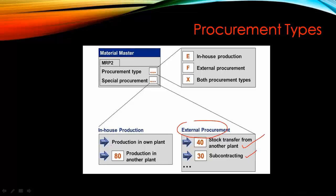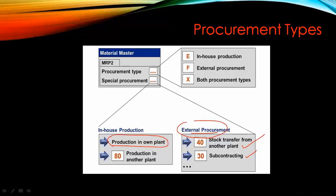When you select in-house, you do production from your own plant. In external procurement, when you select 40 for stock transfer, that means another plant of your company has stock and you want to transfer it. Or it can be subcontracting. Subcontracting is a materials management topic — for example, if you want to drill holes and put screws for a component, you can subcontract that to a third-party vendor who will do only that job and send the material back to you. That's called subcontracting, which is part of MM.